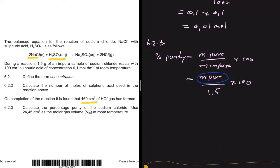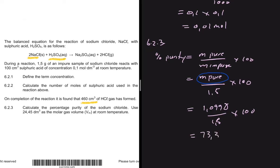Going back to our percentage purity formula, we substitute the mass of the pure sample: 1.0998 divided by 1.5, multiplied by 100, which gives us 73.32%.